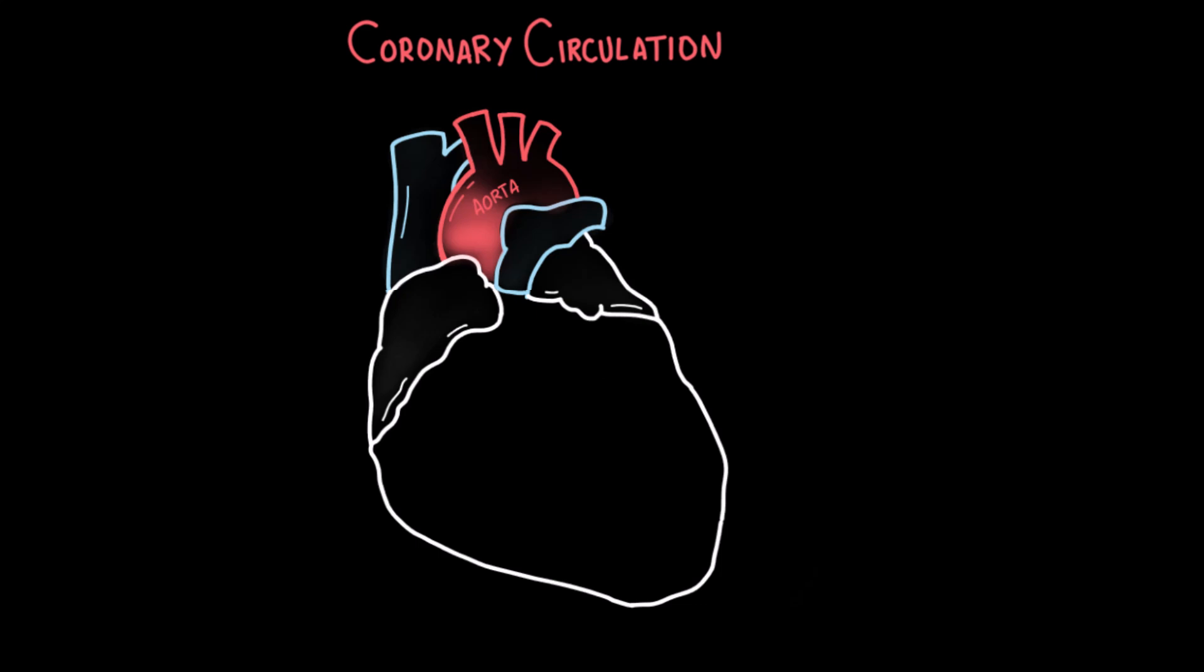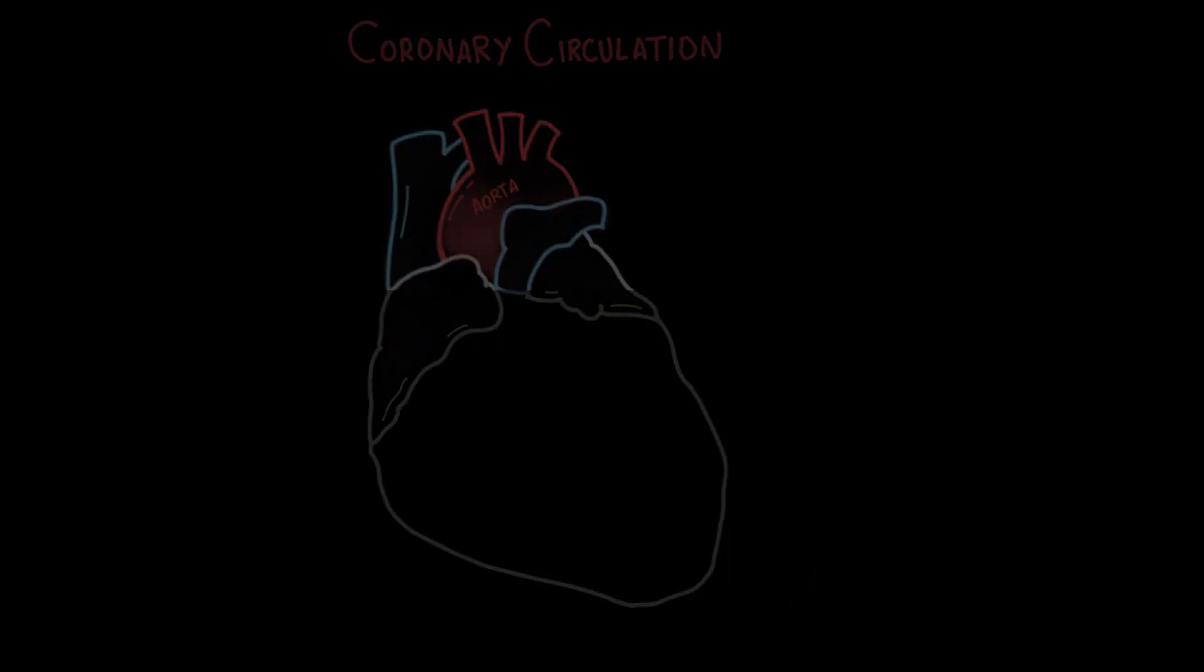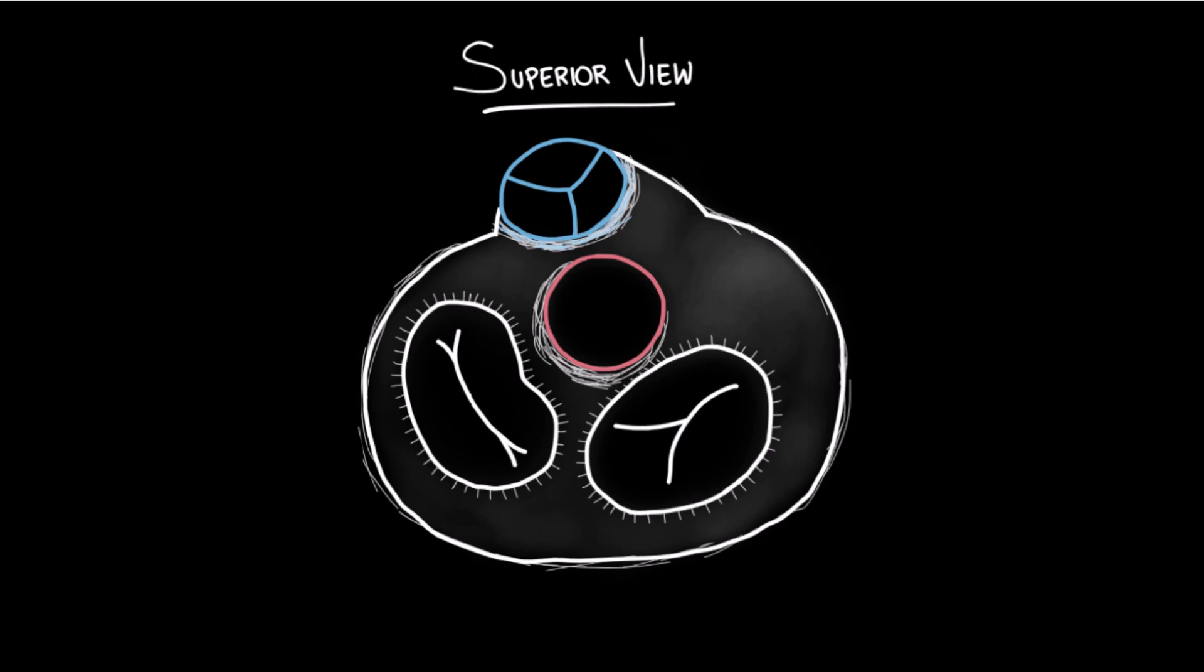To better understand where the coronary artery arises from, let's take a look at a superior view of the heart. Here we have the aorta with the aortic valve. This is the right cusp of the aortic valve and just superior to it, we see the opening of the right coronary artery.